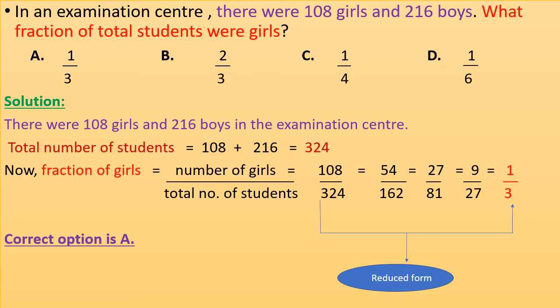There were 108 girls and 216 boys in the examination center. So total number of students = 108 + 216 = 324. Now fraction of girls = number of girls ÷ total number of students = 108/324 = 54/162 = 27/81 = 9/27 = 1/3. Correct option is A.